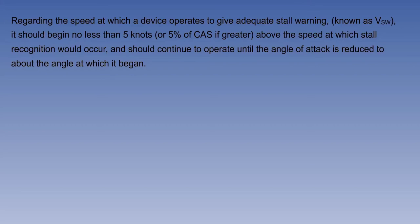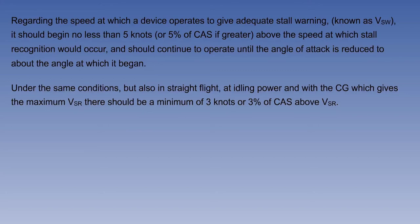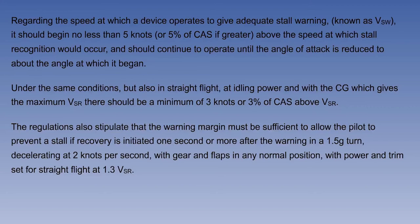Under the same conditions, but also in straight flight at idling power and with the CG which gives the maximum VSR, there should be a minimum of 3 knots, or 3% of CAS, above VSR. The regulations also stipulate that the warning margin must be sufficient to allow the pilot to prevent a stall if recovery is initiated one second or more after the warning, in a 1.5G turn decelerating at 2 knots per second, with gear and flaps in any normal position, and with power and trim set for straight flight at 1.3 VSR.